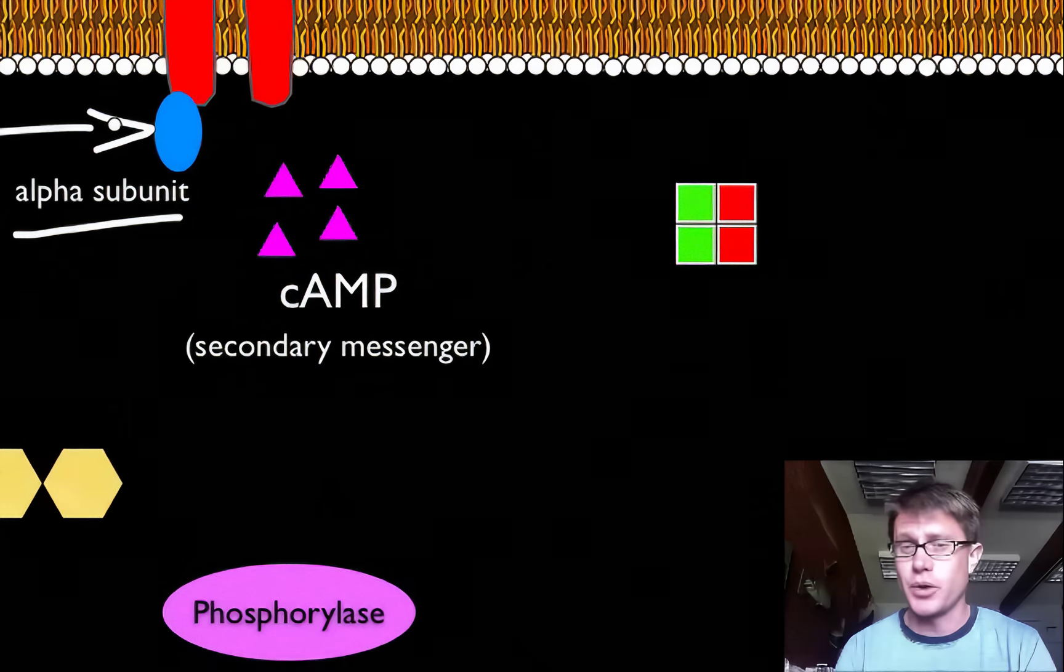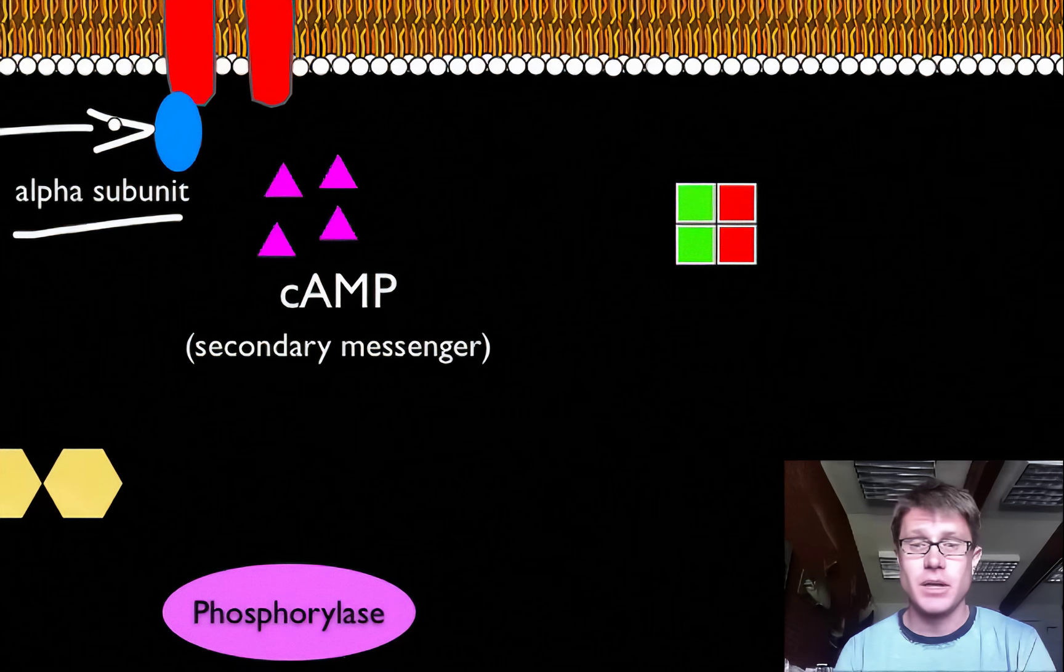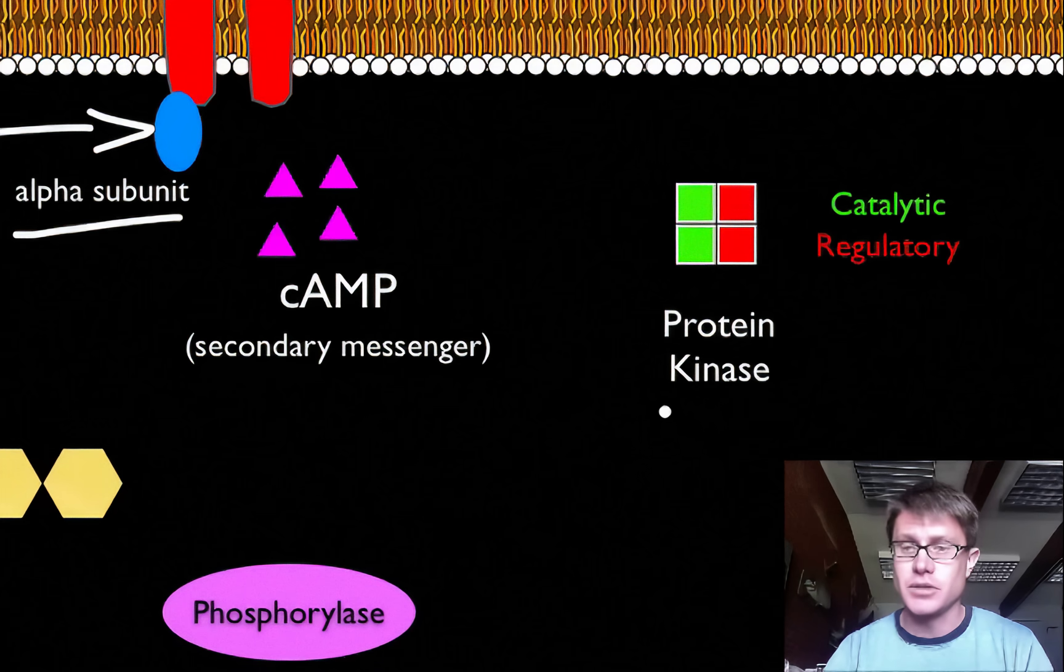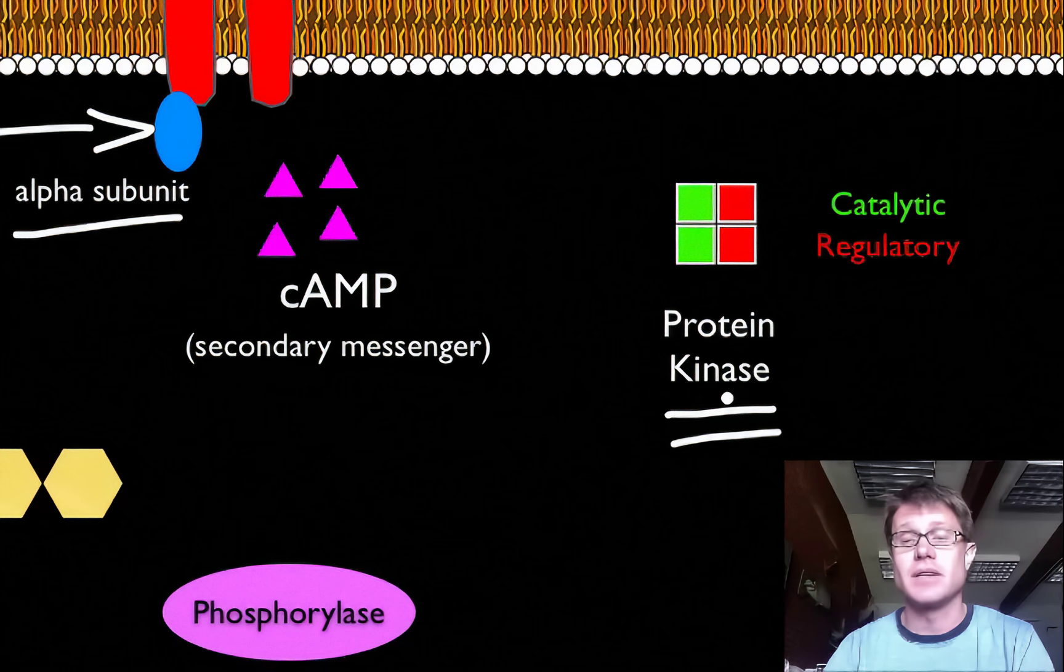Messengers are going to spread throughout the cell. And this is called cyclic AMP. And those secondary messengers in this case are going to target something called the protein kinase. Protein kinase, it's made up of a number of different subunits of protein. But kinase means it does something or it does action.